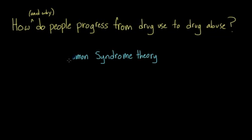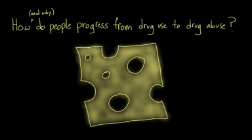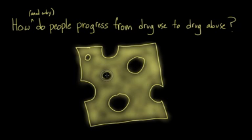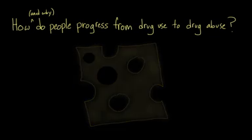A more nuanced way of talking about this is to use what researchers sometimes refer to as the Swiss cheese model. So here we have a piece of Swiss cheese, and of course it has holes in it. Imagine that every individual on Earth is a unique slice of Swiss cheese. The placement of holes, the size of these holes, and the number of holes vary from person to person. The solid parts of the cheese represent things that can protect us from substance abuse — the more solid area you have, the less likely you are to use substances. The holes, on the other hand, represent risks, so individuals with many or large holes would be at a greater risk for substance abuse.